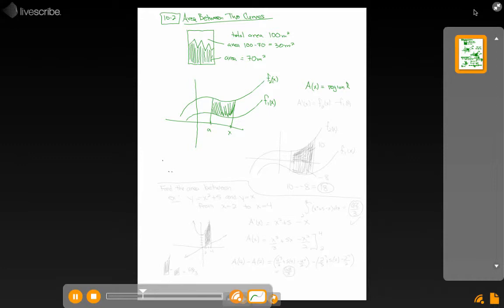So as long as one function is above the other, we can say that our a prime is equal to f2 minus f1 of x. Which means that when we go to do our antiderivative, or find our area, we're basically going to do the same thing we did in 10.1. If I take the integral here, find the area from a to x, antiderivative, I'll be able to find that.